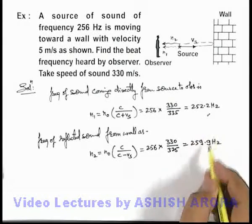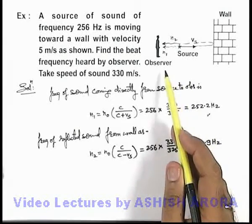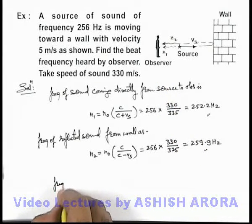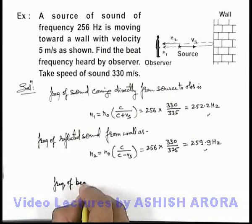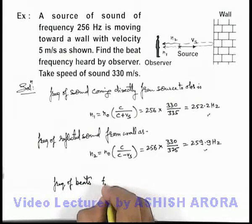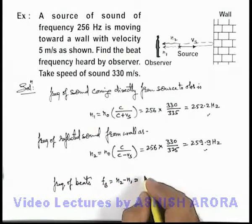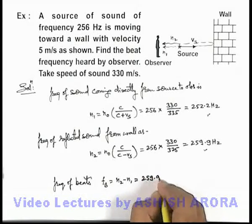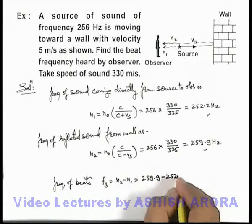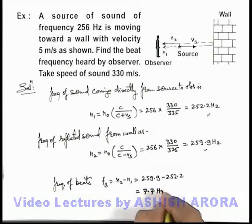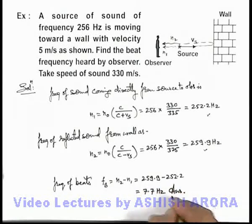And these two frequencies are approaching to the observer simultaneously, so we can find out the frequency of beats which will be received by the observer. This can be written as n₂ minus n₁. On substituting the values, 259.9 minus 252.2, this will be 7.7 Hz. That is the answer to this problem.